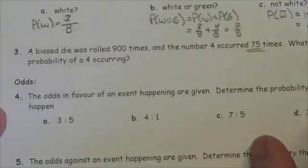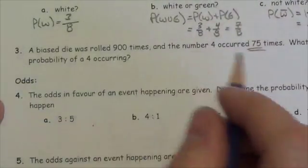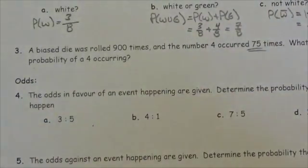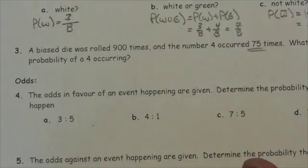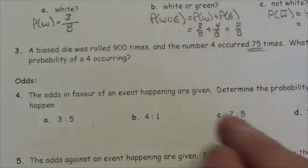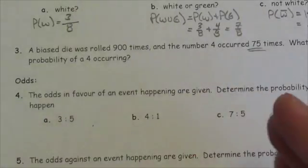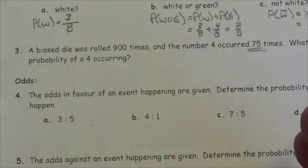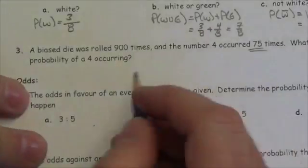So what is the experimental probability of a 4 occurring? Now here's the thing: theoretically the probability of a 4 occurring should be 1/6, even if it's a biased dice, because you don't typically know that when you look at it. There are six different outcomes, so the probability of a 4 coming up should be 1/6. It's not until you do the experiment that you know that it is actually biased.